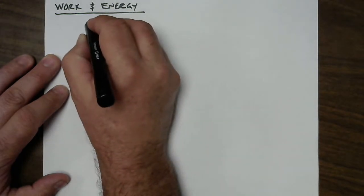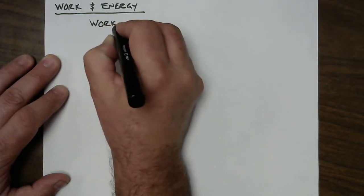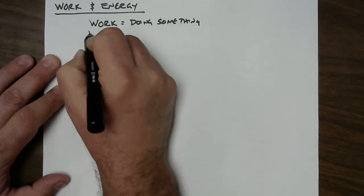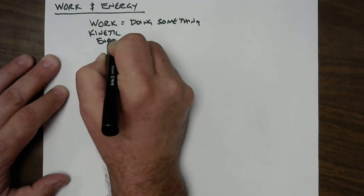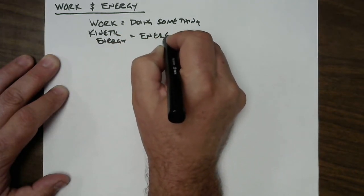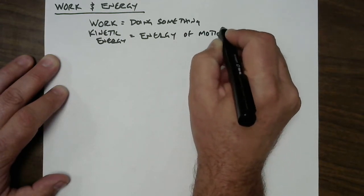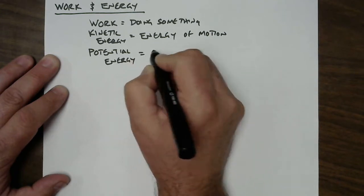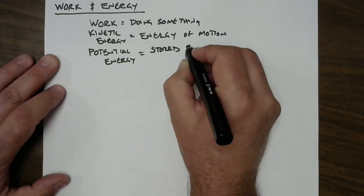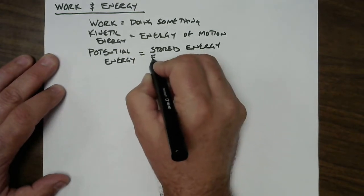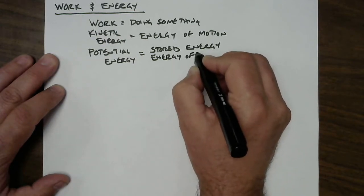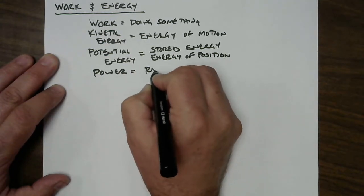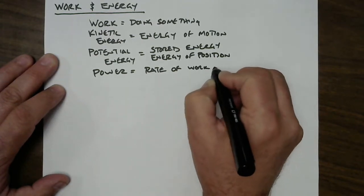So the first thing we're going to define is that there are four terms. We're going to be talking about work, which is doing something. We're going to be talking about kinetic energy, which is the energy of motion. Anything that is moving has kinetic energy. We're going to be talking about potential energy in the next chapter, which is stored energy, or the energy of position. And then finally, power, which is the rate of work or energy.